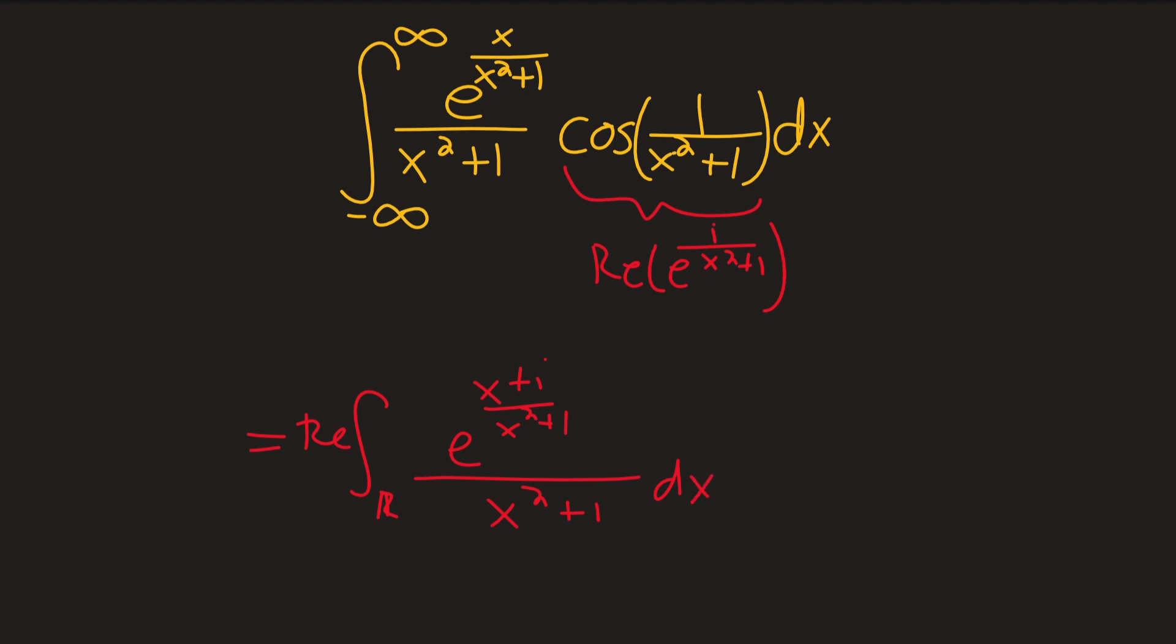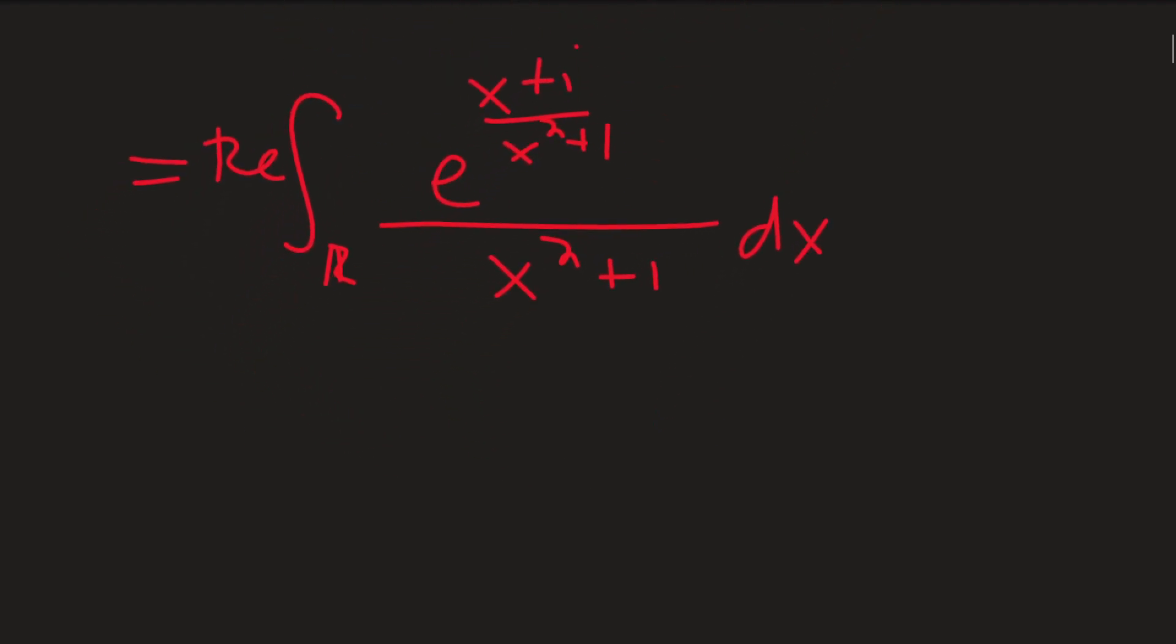And you'll notice just a couple of things here. Firstly, that we have a pole at, or we have two poles actually. We have poles at x equals i and also negative i.